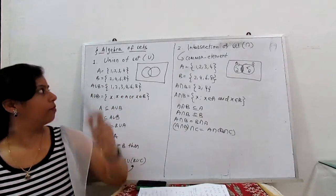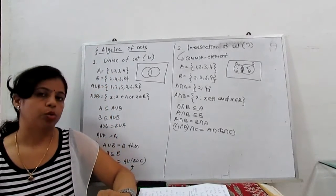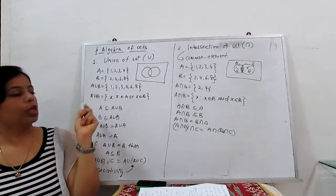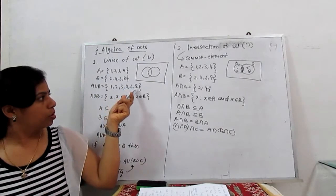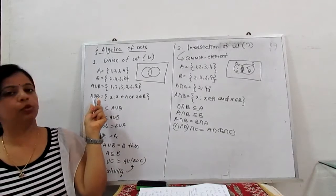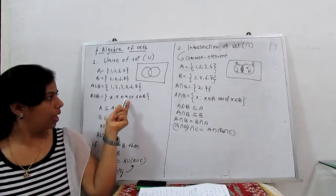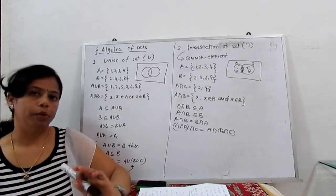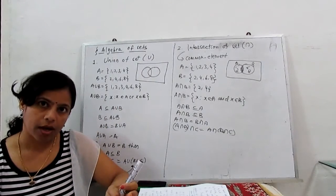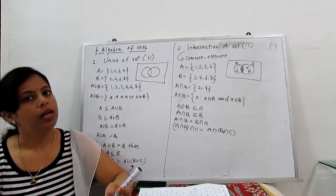We never write the repeated element. For example, 2 belongs to A also and 2 belongs to B also, so we only write it one time in the new set. This is our roster form. In builder form, the definition of A union B is: {x : x belongs to A or x belongs to B}. It is not necessarily belonging to both, but for union, either x belongs to A or x belongs to B gives A union B.